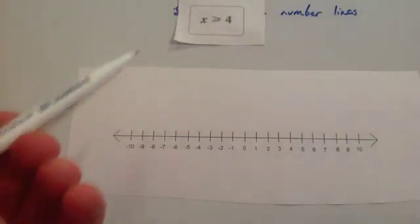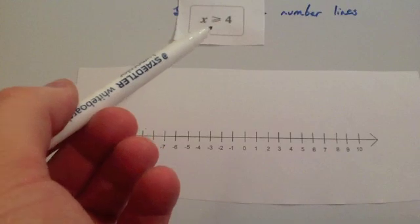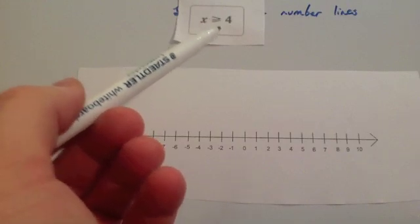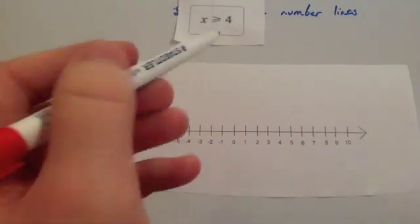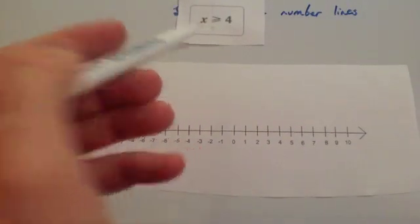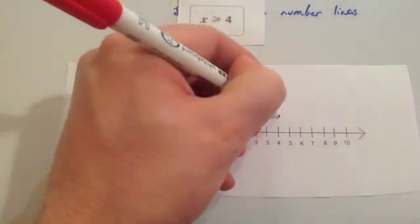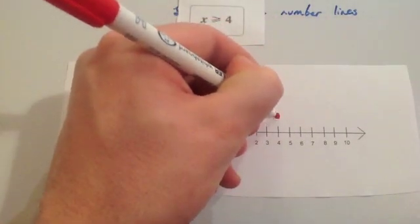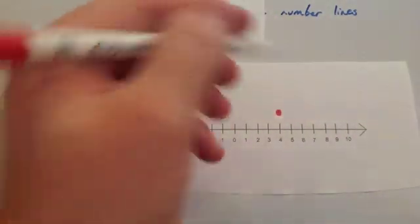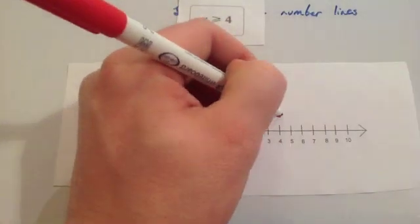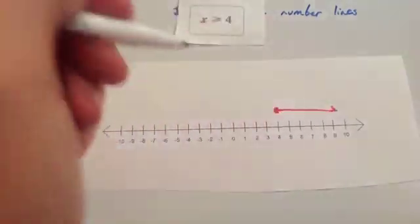This time the inequality is x is larger than or equal to 4, or greater than or equal to 4. So you go to 4, and because it's larger than or equal to, you shade in the circle at 4. And because it's going to be larger than it, you do an arrow to the right.